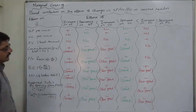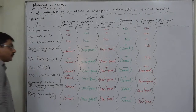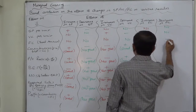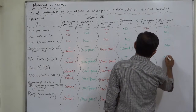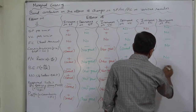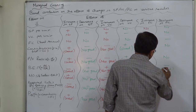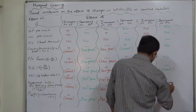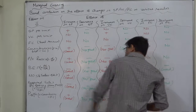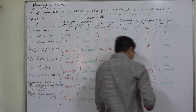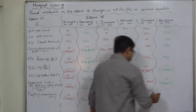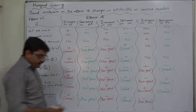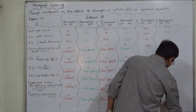If fixed cost decreases: no change in selling price, no change in variable cost. Fixed cost decreases, no change in contribution, no change in PV ratio. But BEP goes down — good for the financial health of the company. Since BEP goes down, margin of safety increases — good. Required sales decreases because in the formula the fixed cost decreases, so ultimately the sales required to earn the same amount of profit decreases — good. No change in total contribution, and since fixed cost decreases, profit will increase.